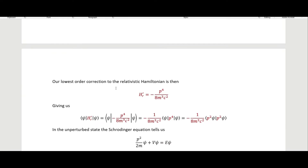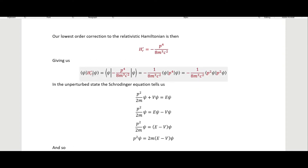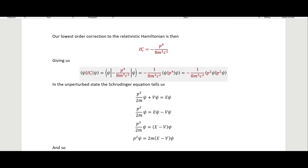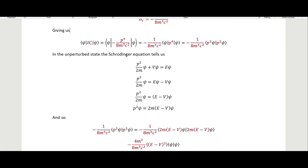Our lowest-order correction for the relativistic Hamiltonian is −p⁴/8m³c². Putting that into bra-ket notation, we can pull out the constant and have p⁴ in the middle. We can split p⁴ into p² times p², and in the unperturbed state the Schrödinger equation gives p² acting on our wave function equal to 2m(E − V).